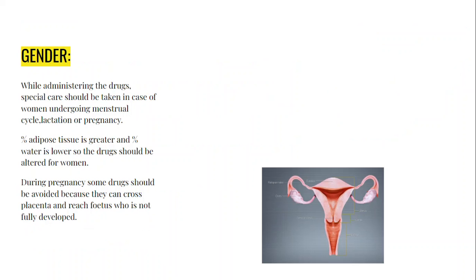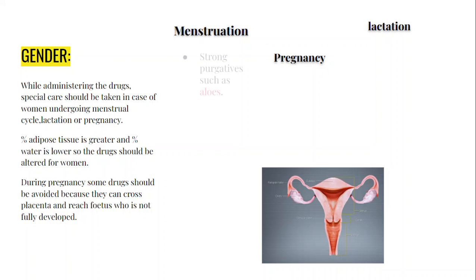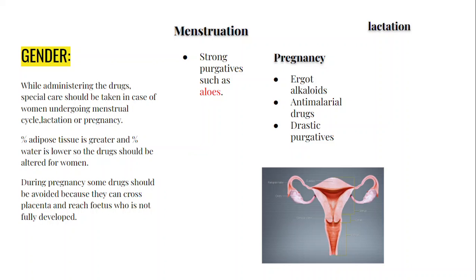The second factor is gender. While administering drugs, special care should be taken in case of the menstrual cycle, pregnancy, and lactation. Certain drugs should be avoided — for example, strong purgatives such as aloes during menstruation; ergot alkaloids, anti-malarial drugs, and drastic purgatives during pregnancy; and antihistamines, tetracycline, and morphine during lactation. During menstruation, some drugs can irritate the uterine lining, so those drugs should definitely be avoided.